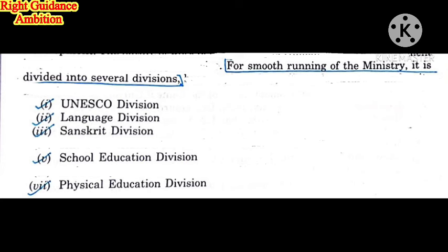The first division is the UNESCO Division, which deals with heritage sites and educational historical background places — related information and techniques to preserve them, including educational tours for children. The second is the Language Division, which implements the three-language formula used in India.